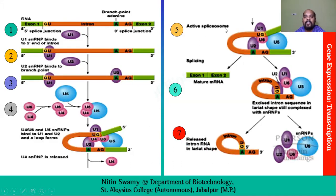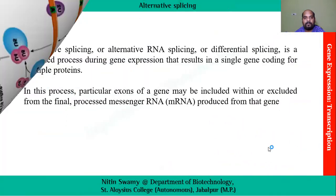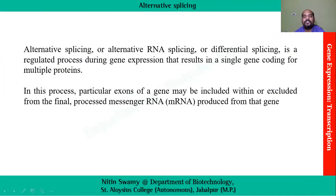When the spliceosome becomes active, cuts are made at both splice sites and splicing occurs. The result is mRNA containing exon 1 and exon 2 joined together, while the excised intron sequence in lariat shape remains complexed with snRNPs. Finally, the intron RNA in lariat shape is released, goes back into the system to be recycled, and the snRNPs are also recycled. This splicing process is very important.